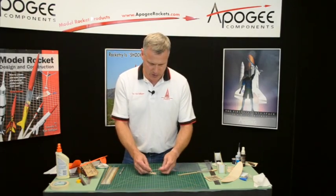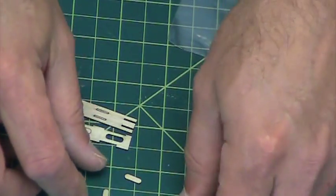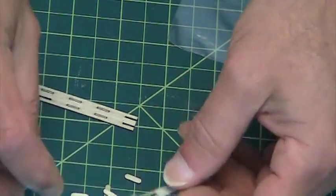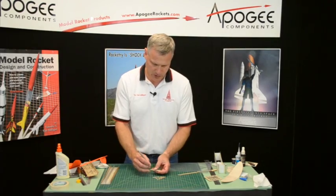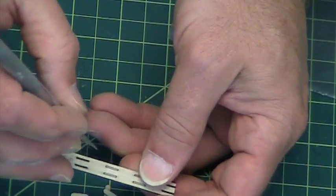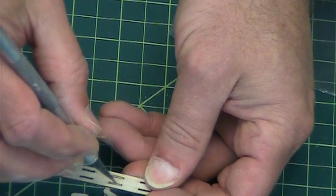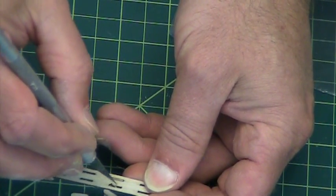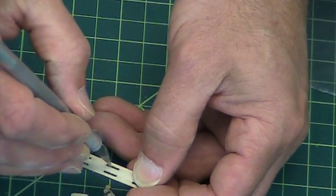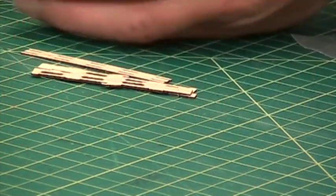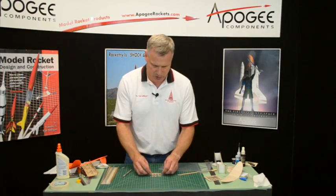And you'll notice that they also have little tabs in them and you can pop those out. They come out really nice and easy. The little slots here sometimes it helps to use a knife to push those through. All right, so those little pieces I won't need. These are the ones that I do need. And you'll see that they're labeled.